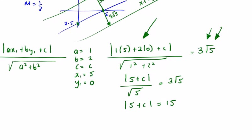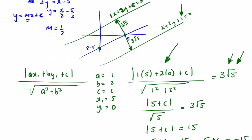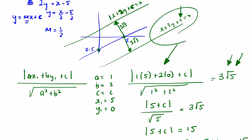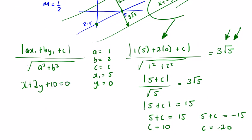We allow 5 plus c equals 15, and 5 plus c equals −15. So c equals 10 or c equals −20. The equations of our two lines are x minus 2y plus 10 equals 0, and x minus 2y minus 20 equals 0.